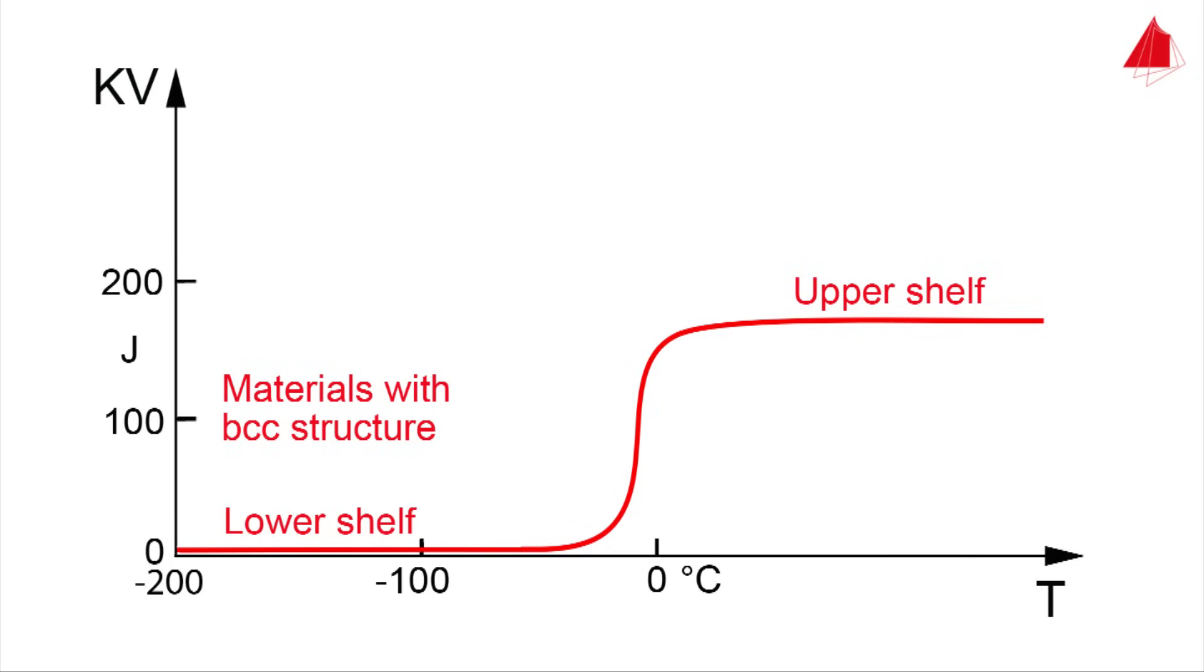At low temperatures in the lower shelf region, only a small amount of impact energy is absorbed and brittle fractures occur.